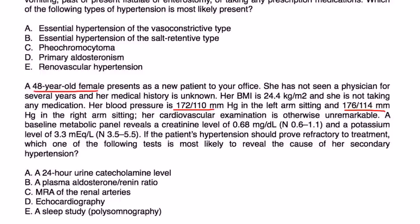A baseline metabolic panel reveals a creatinine level of 0.68, and a potassium level of 3.3. If the patient's hypertension should prove refractory to treatment, which one of the following tests is most likely to reveal the cause of her secondary hypertension?